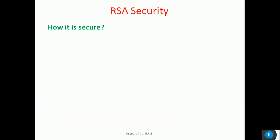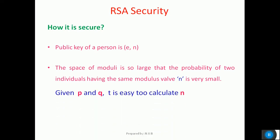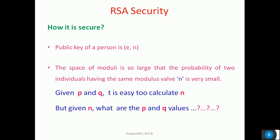Now, how is the RSA algorithm secure? As understood in the previous discussion, the public key is a combination of two elements: E and the modulus N. The space of this modulus is so large that no two people can arrive at the same modulus N, and the probability of collision is very less. This problem is totally based on factorization. Given two prime values P and Q, it is very easy to calculate N, which is the modulus. But the reverse — given the N value which is an integer — it is very difficult to find the prime factors P and Q. This is called the factorization problem, and there lies the security of the RSA algorithm.